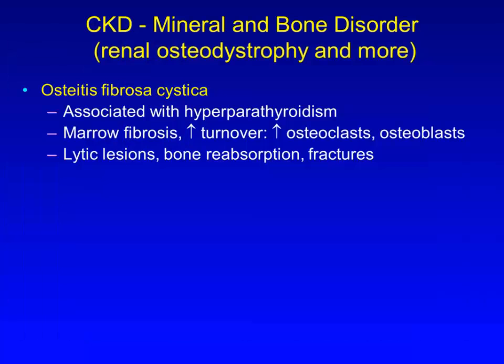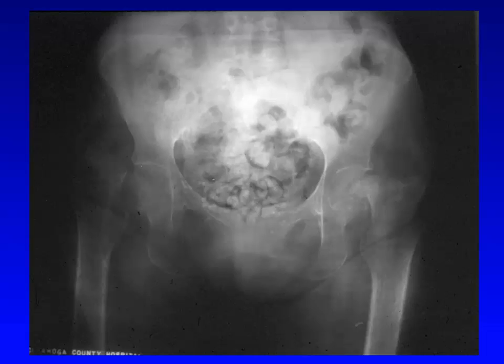Clinically, patients develop lytic lesions — hence cystica — from the PTH-stimulated bone reabsorption, which translates to osteopenia and fractures. Here's an example of salt-and-pepper skull with innumerable tiny lytic lesions. Here the bones appear to be washed out and to have decreased density, and you can see that both femoral necks are fractured. Also, if you look closely, you'll notice lytic lesions in the femurs.